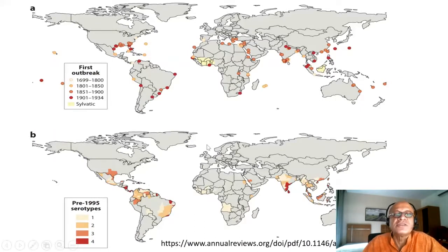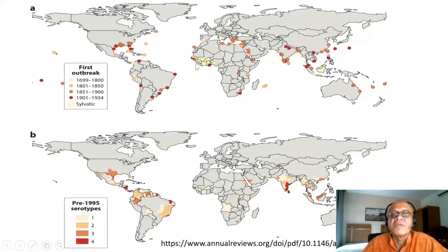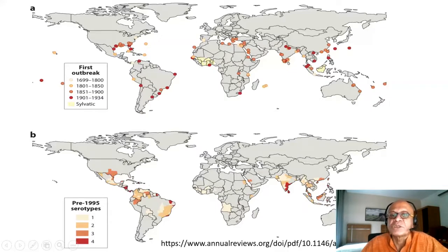Here are maps showing reported dengue outbreaks before 1935, going back to the 1600s — from the 17th through 19th centuries — and dengue was present across much of the world. The early distribution was sylvatic, meaning it was related to wildlife. It was probably carried by wildlife and entered human populations via contact, at a time when areas were much less urbanized.